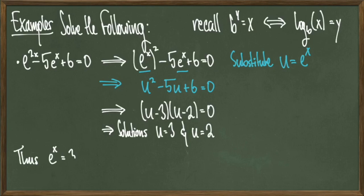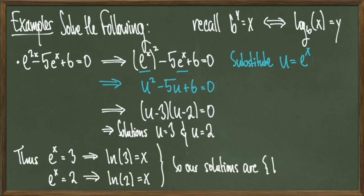And then we realize that e to the x has to equal 3 and e to the x has to equal 2 using this substitution, which tells us that natural log of 3 equals x and natural log of 2 equals x. From this, we distill a solution set of natural log of 2 and natural log of 3.